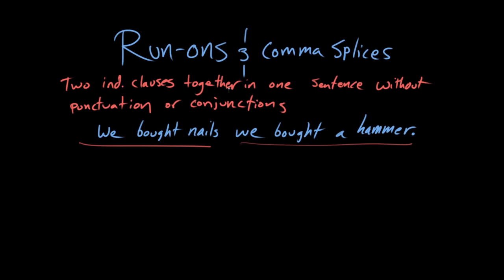Another way you could do that would be to just add a comma and then the conjunction 'and'. So you're connecting those two clauses. This is a run-on sentence without this 'and' and this comma, and it's called that because it's sort of like a runaway train — it doesn't have enough stoppage in it.